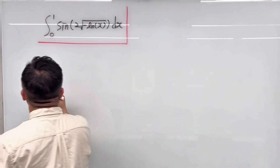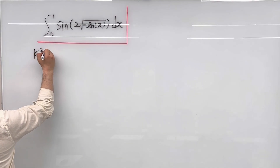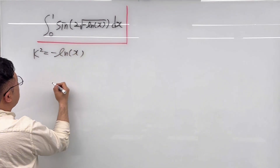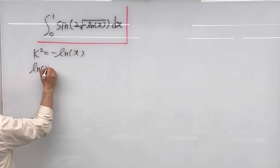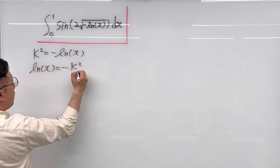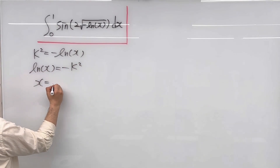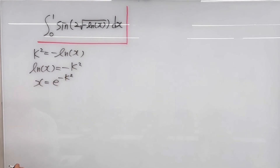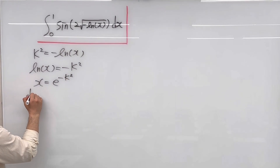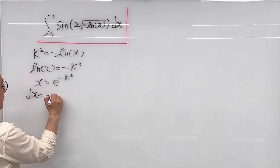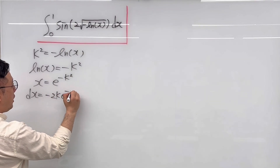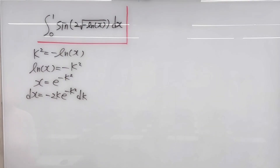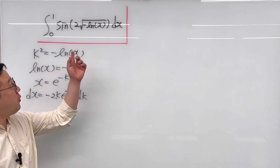Let me make a substitution, calling k² as negative ln(x). Then ln(x) equals negative k², so x equals e to the power of negative k². That means dx equals negative 2k times e to the power of negative k² dk. Using all of this, let's rewrite this integral.